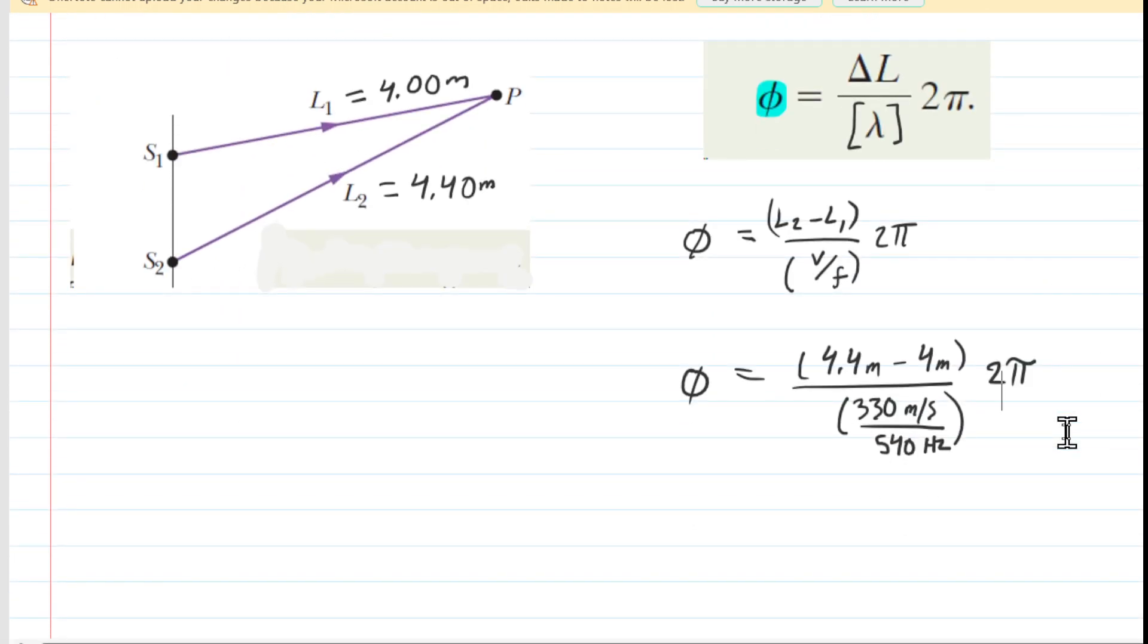So we've plugged in the values dimensionally in the numerator. You have meters and the meters cancel with the meters there in the speed. And then the inverse seconds here and the inverse seconds there are going to cancel each other out as well. So we're going to be left with just radians because that's the unit of the 2 pi.